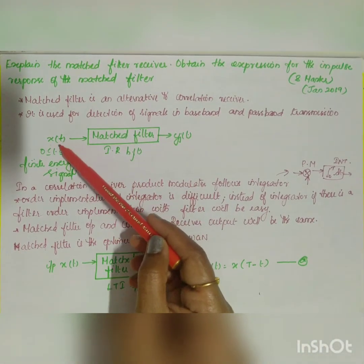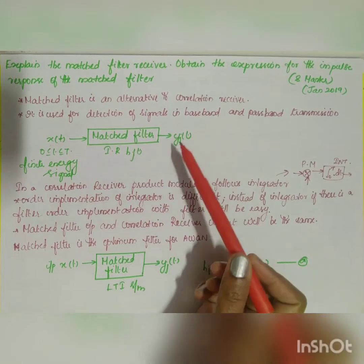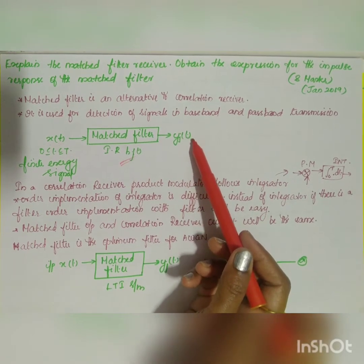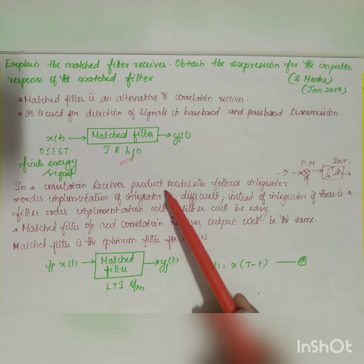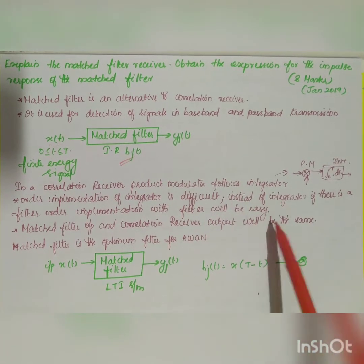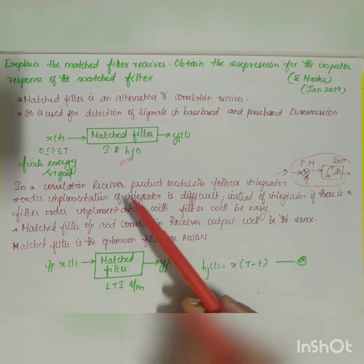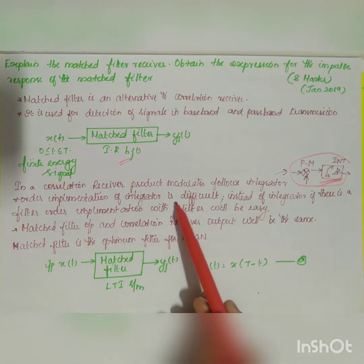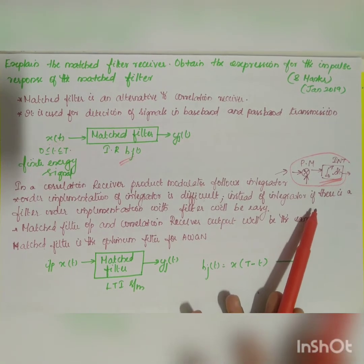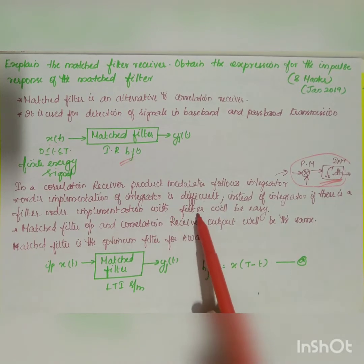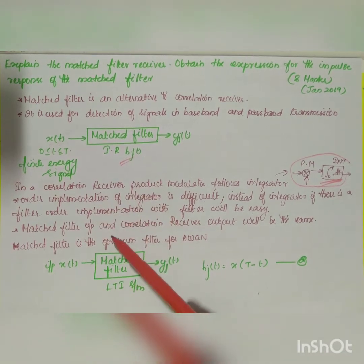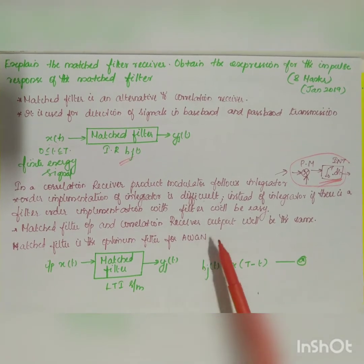The input to the matched filter is the received signal x(t), a finite energy signal. The impulse response is assumed as h_j(t), and the output is y_j(t). In a correlation receiver, a product modulator followed by an integrator is used. However, implementation of the integrator is difficult, so using a filter instead is much easier — that's why we use the matched filter. The matched filter output and correlation receiver output are the same. The matched filter is the optimum filter for AWGN.